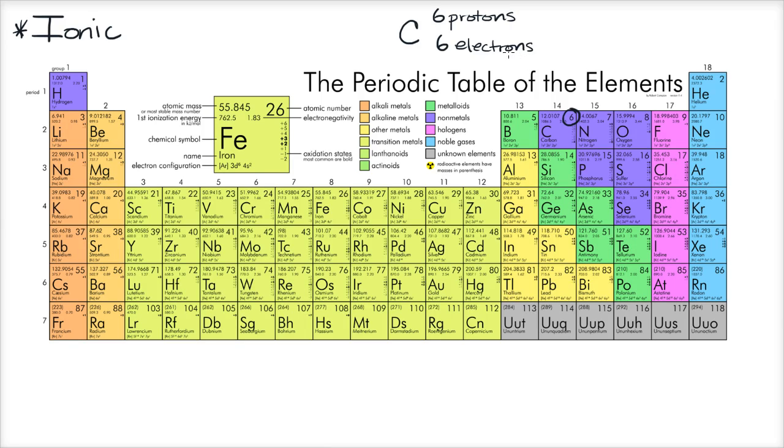Now, you could have a carbon ion, although they aren't that typical. The way you get an ion is if you don't have an equal amount of protons and electrons. So for example, if you had six protons and five electrons, what would that be?